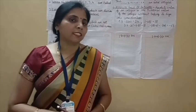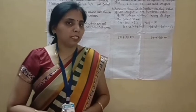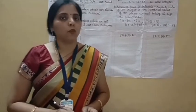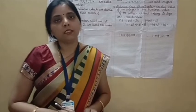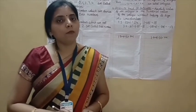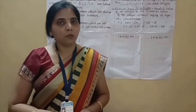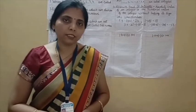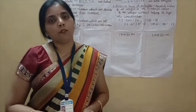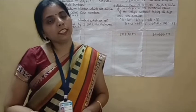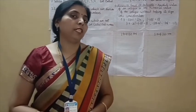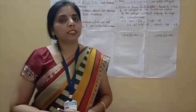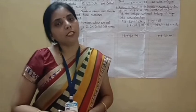So students, ये definitions हमने class 6 में की थीं। Natural numbers वो सारे counting numbers हैं जो 1 से start होते हैं। Whole numbers 0 से start होते हैं। Even numbers वो हैं जो 2 से divide हो जाते हैं, और odd numbers वो हैं जो 2 से divide नहीं होते।